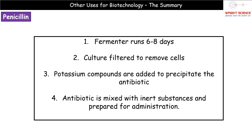So how does it work? We run our fermenter for six to eight days — remember, in batch culture we run it for a fixed time period — then we remove the culture and filter it to remove the cells. We then add some potassium compounds which will precipitate the antibiotic, meaning it comes out of solution. That antibiotic is then mixed with other inert substances so that it can be prepared for administration to patients. A quick overview of why this is a batch process is all you need to know.